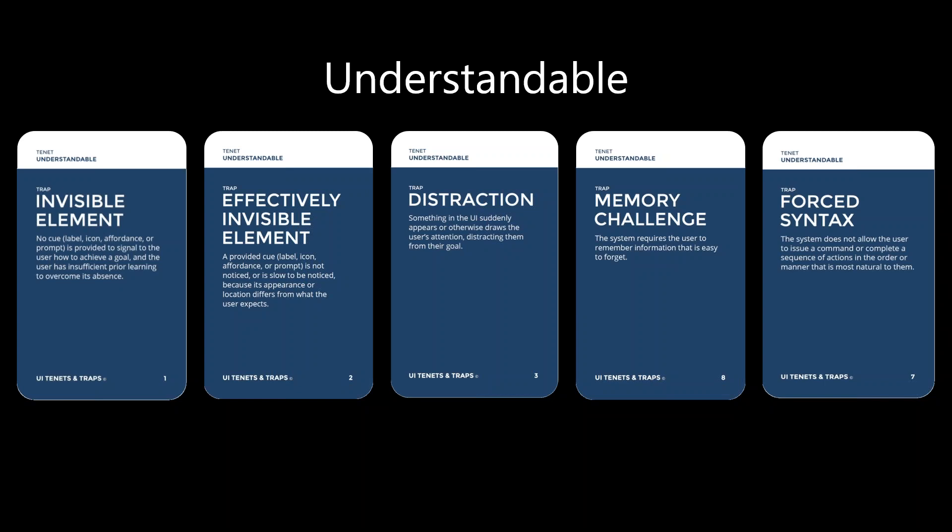Something that can steal our users' attention is different types of distractions. 'Memory challenge' is another trap — this is when the system forces us to remember things that humans might have issues remembering, but the system could easily handle. And 'forced syntax' is when the system doesn't allow the user to write, speak, or act in a natural way for them. Now let me start with a story about my mother. My mother is as un-technical as they come.